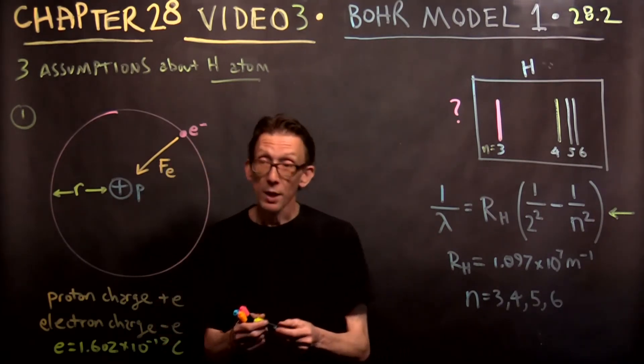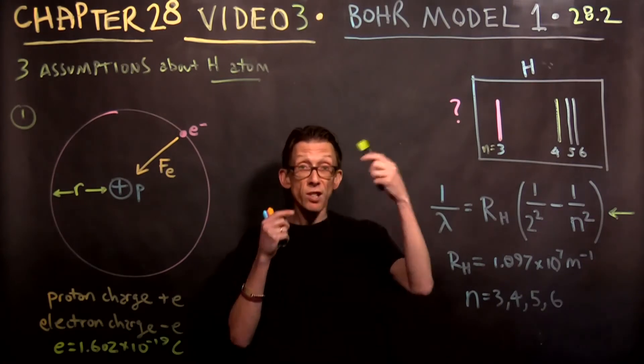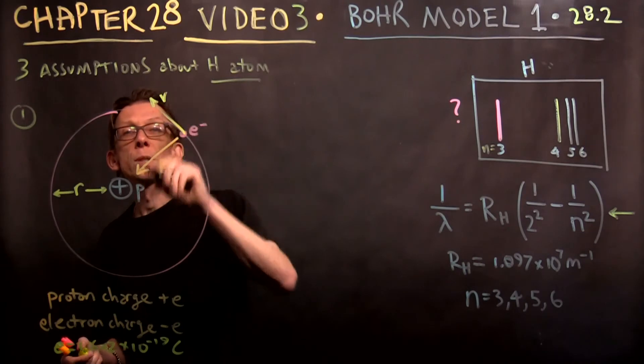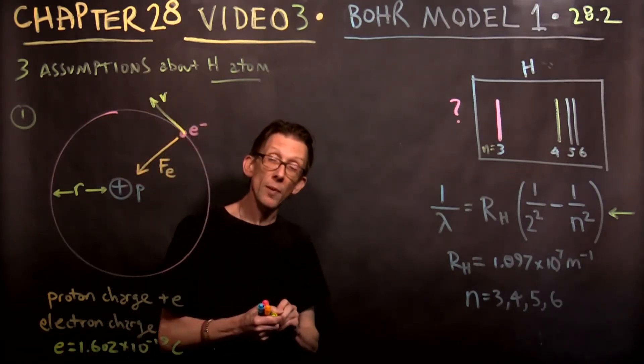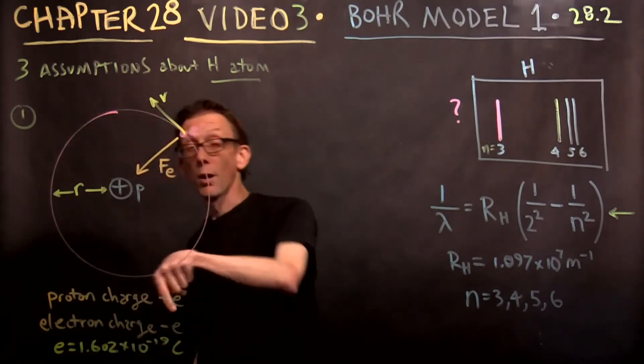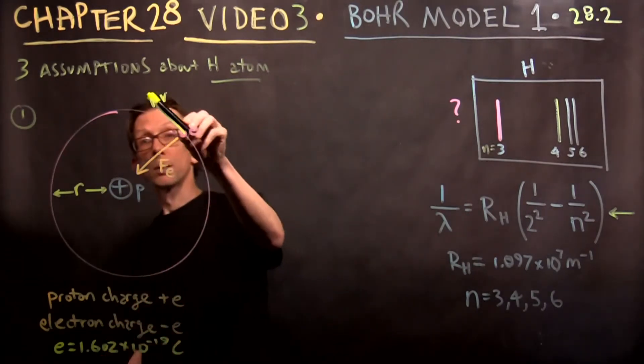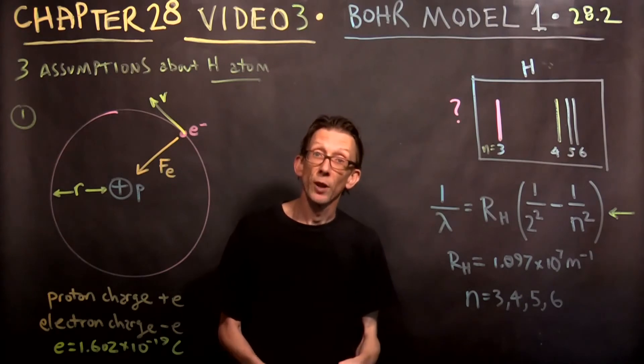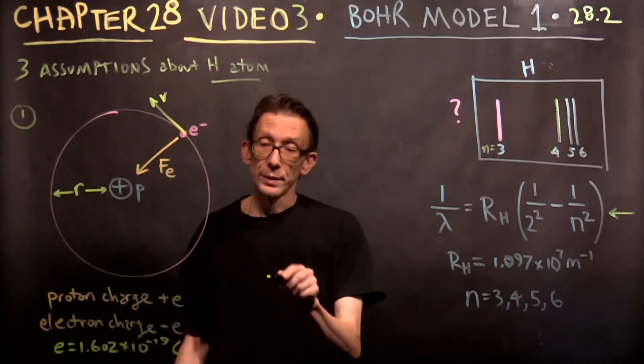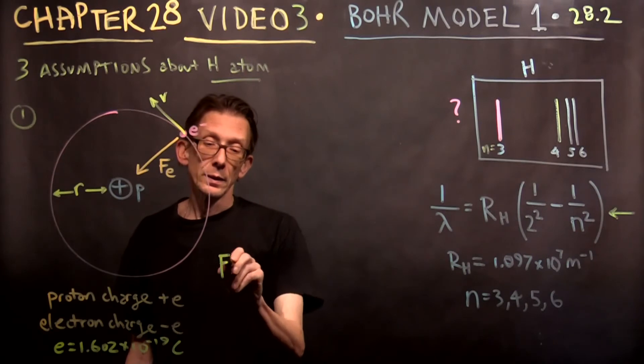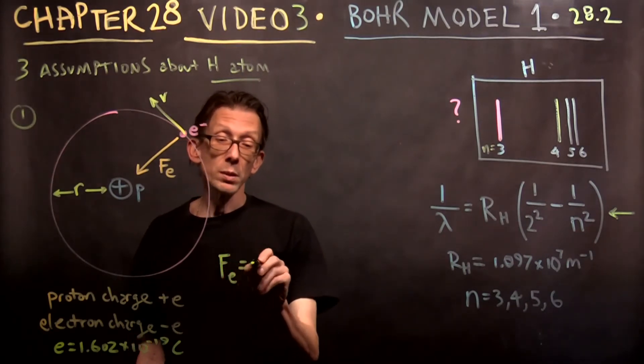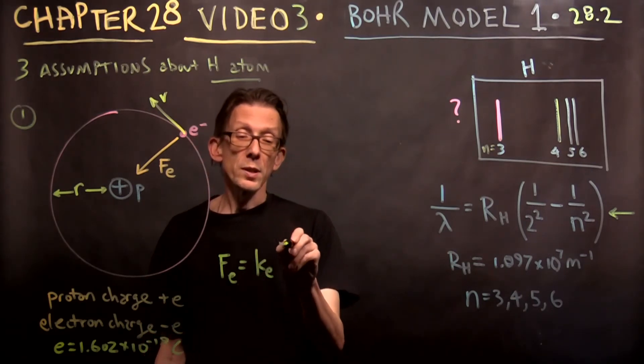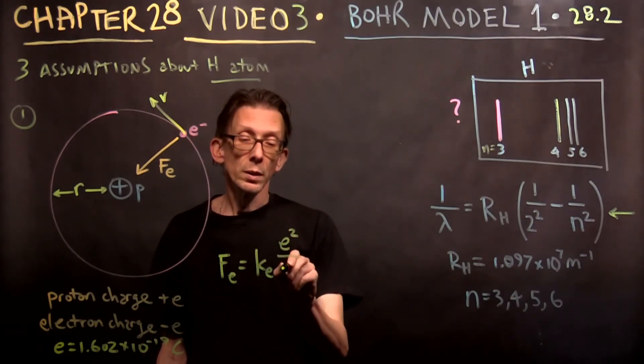The distance is R. So his first assumption was that there's a circular orbit here. And the thing moves around with speed V. That's the velocity vector. Always, right? The velocity vector is always tangent to the circle as it goes around. And that the force between them is KE, our old friend, times E squared over R squared. That's the Coulomb force law.